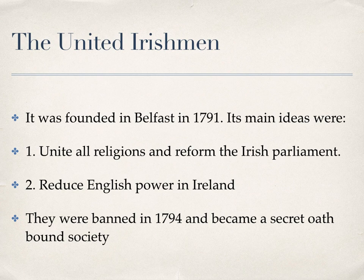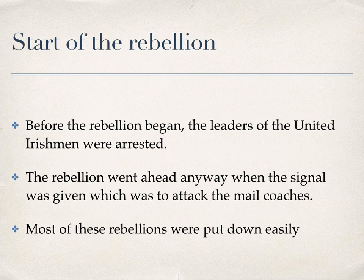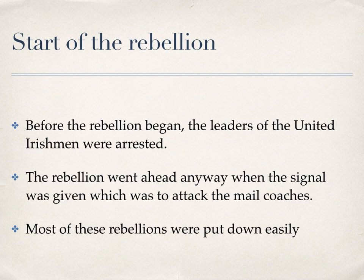Before the rebellion actually began, all the leaders of the United Irishmen who were planning it were arrested. Britain had an amazing network of spies and was able to arrest all the key people, such as Lord Edward FitzGerald. The rebellion went ahead anyway — the signal was to attack the mail coaches so that when the post didn't come, everyone knew it was time to start. Most of these uprisings were put down fairly easily.